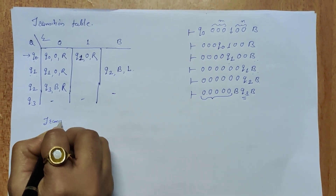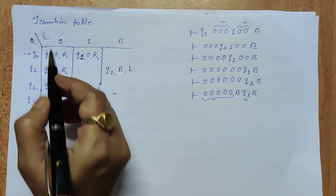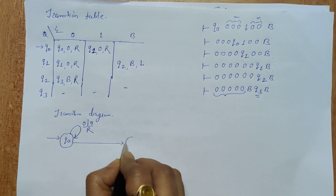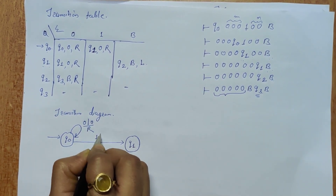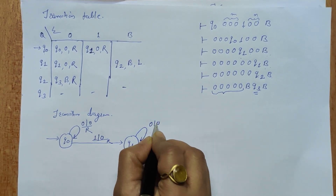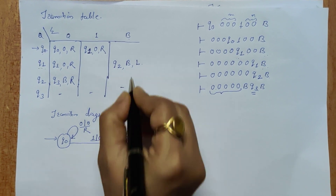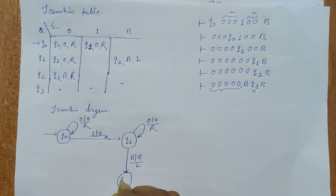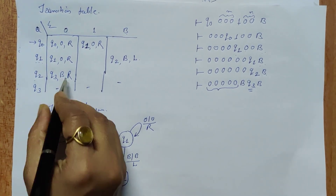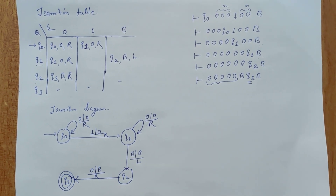Now the transition diagram: start with the initial state q0. On q0, reading a 0, move right staying in q0. When reading a 1, replace it with 0, move right, and change state to q1. On q1, reading a 0, move right. When reading a blank, move left and change state to q2. On q2, when reading a zero, replace it with blank and move right, reaching final state q3. This completes the example of addition of two integers.